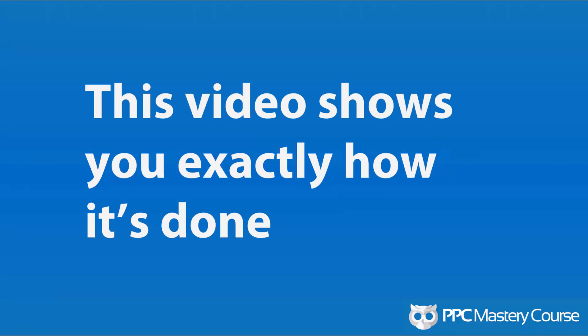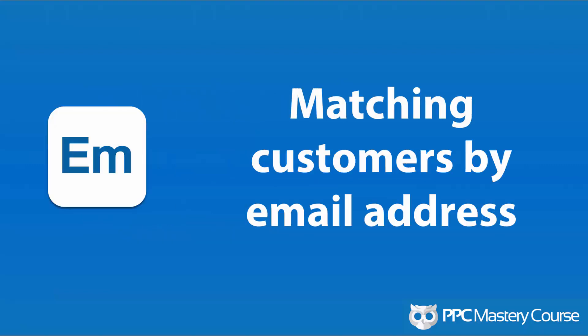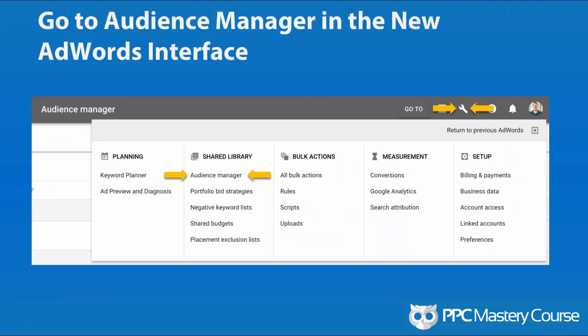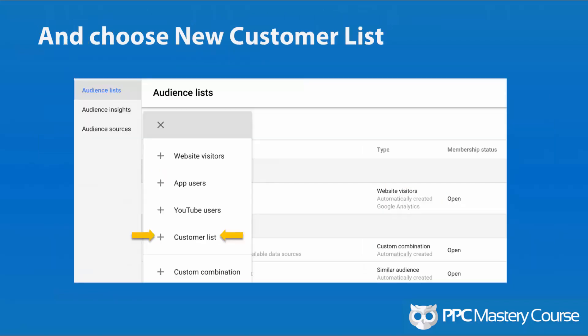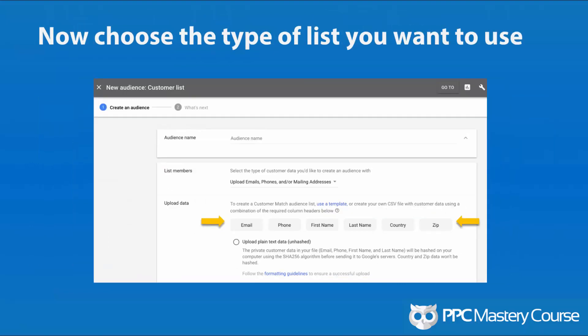This video shows you exactly how to upload your lists, how to get them into AdWords, and what it looks like when it's done. First, I want to show you how to match customers by email address. In the new Google AdWords, you click on the gear icon for settings, go to audience manager, and within there choose to create a new customer list. Once in the customer list area, you choose the option to upload a list of emails, phones, and mailing addresses.